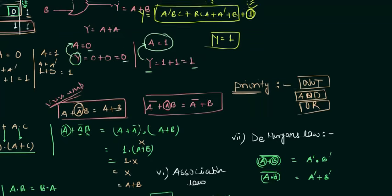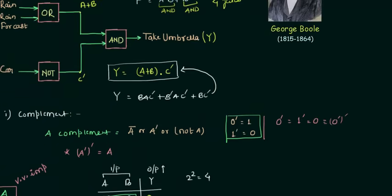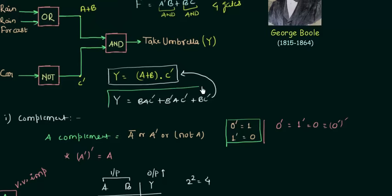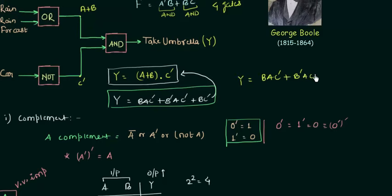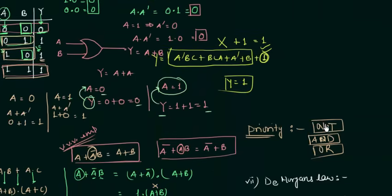Now we will see one example — the umbrella problem from the introduction, where y = (a OR b) AND c'. We are going to reduce this expression using Boolean algebra. y = ba'c' OR b'ac' OR b'a'c' OR bc'. The first thing to do is solve the complement, following operator priority: NOT first, then AND, then OR.